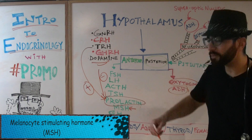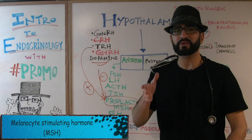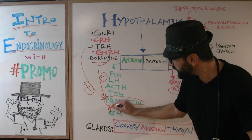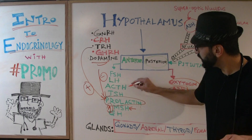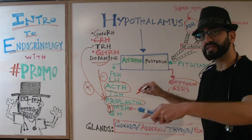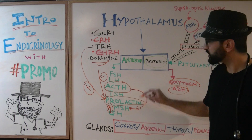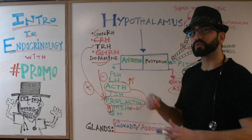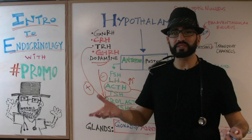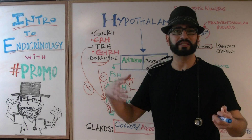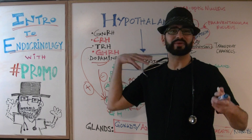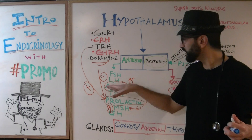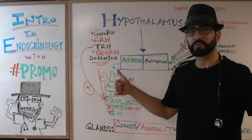Moving on, we have MSH — melanocyte stimulating hormone. MSH is actually increased as a byproduct of ACTH. So when ACTH levels are very high, MSH levels will also be high, causing darkening pigmentation around the patient's neck and shoulders. In future lectures, we'll discuss situations where ACTH levels are elevated above normal.